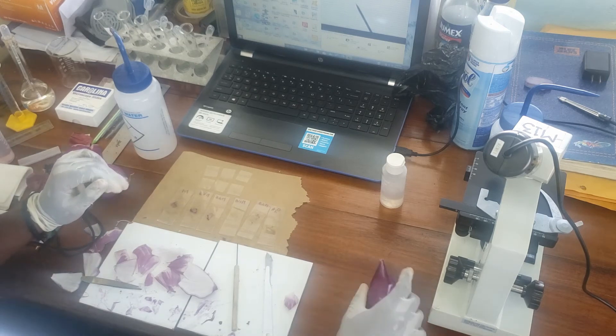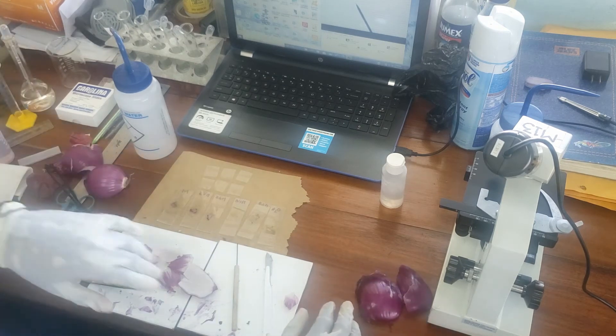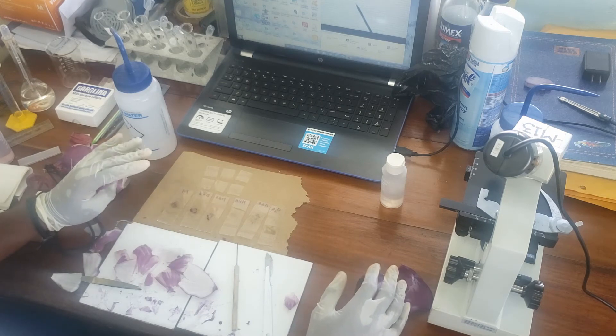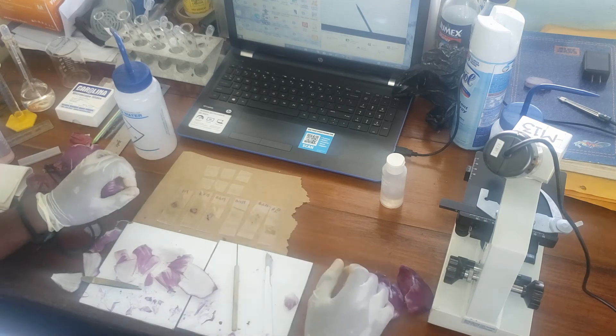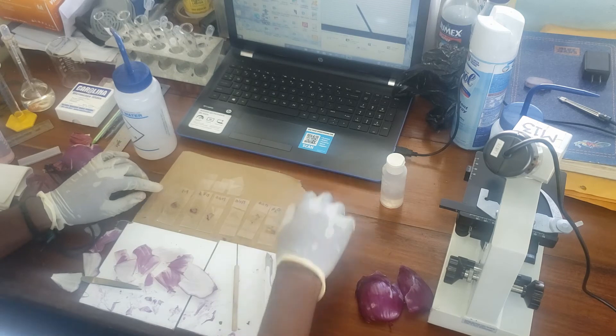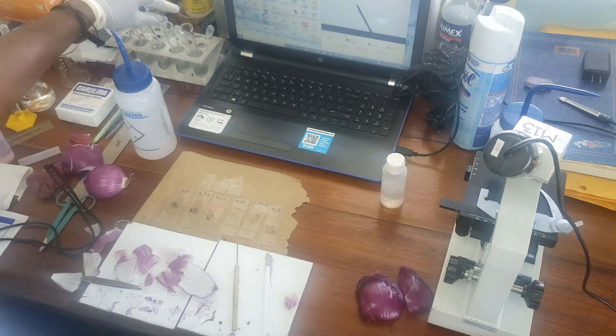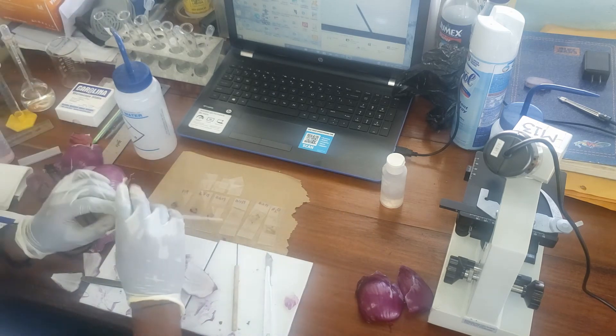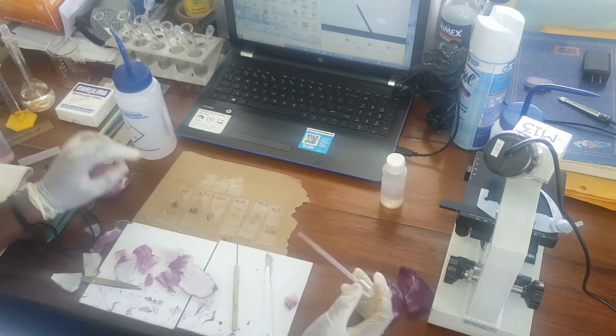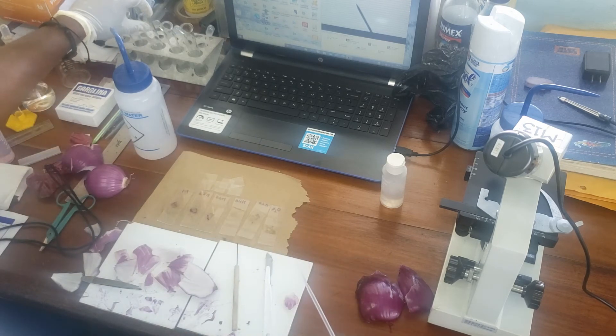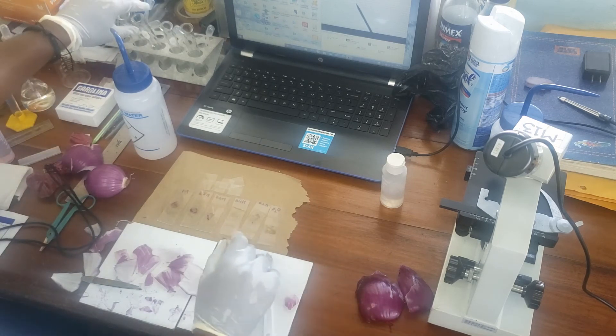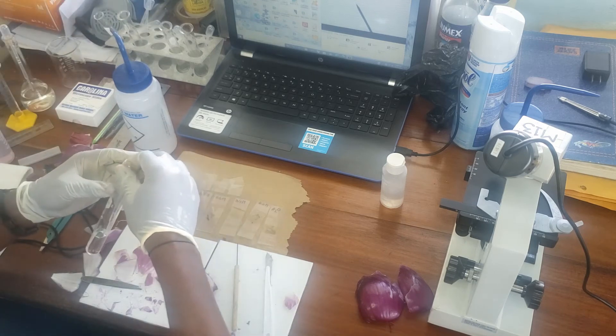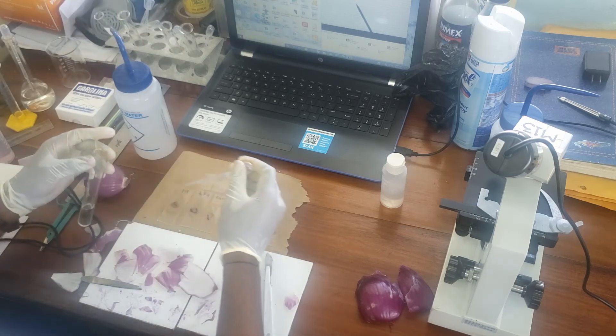Okay, so after we've prepared all the pieces of epidermal tissue, I've already gone ahead and did the first three slides. What we're going to do, we're going to add three drops of each respective concentration solution to the tissue, add a cover slip and let sit for 20 minutes. So these three have been going for about two minutes now. Let's begin the others.